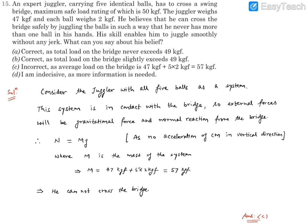This is our system in which 5 balls and juggler is there. This system is in contact with the bridge. The bridge is going to give a normal reaction to this and there will be gravitational force acting on the system. This is a system in which some particles or 5 balls are there, you can say, and a juggler is there.